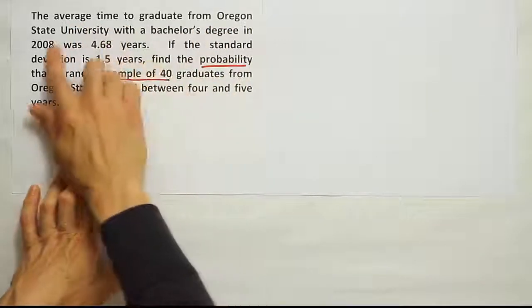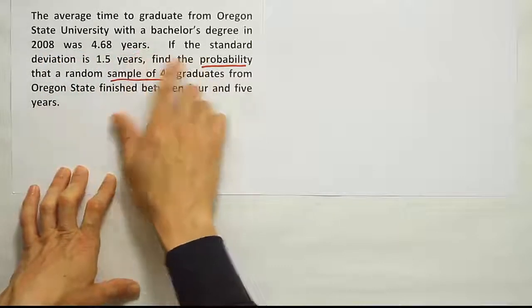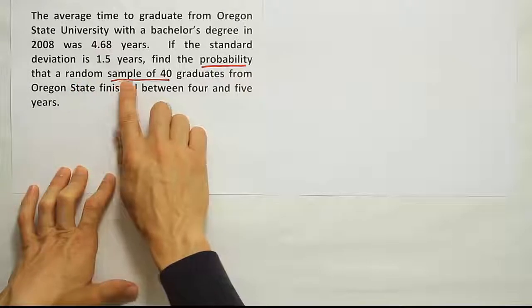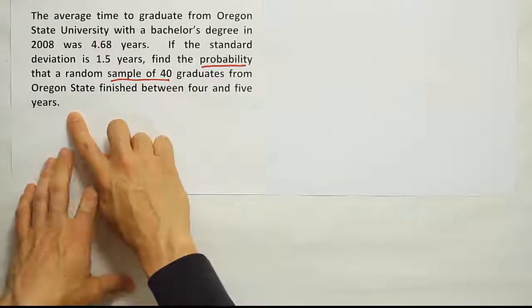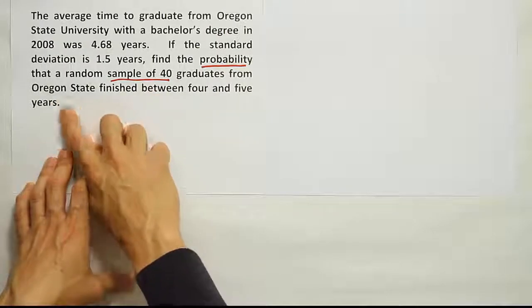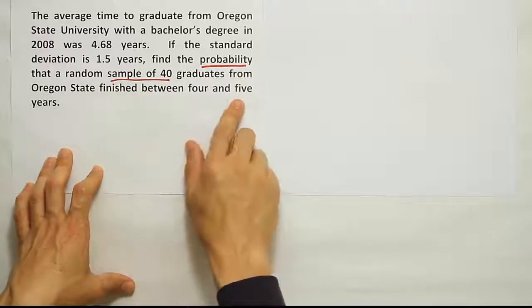The average time to graduate from Oregon State University with a bachelor's degree in 2008 was 4.68 years. If the standard deviation is 1.5 years, find the probability that a random sample of 40 graduates from Oregon State finished between 4 and 5 years. This should say finished between 4 and 5 years on average. So we're looking for the average of this sample of 40 to have finished between 4 and 5 years.